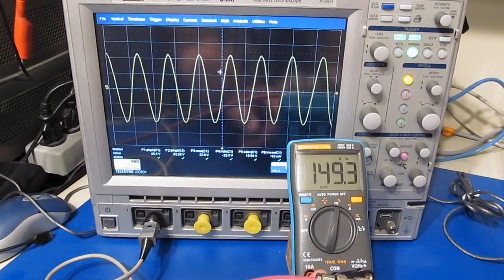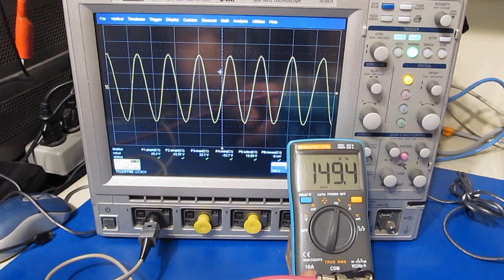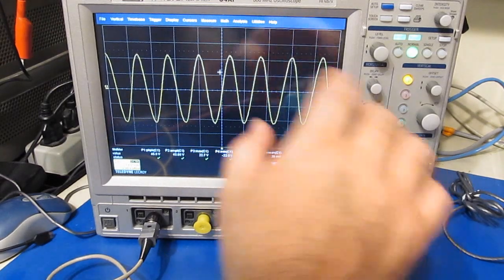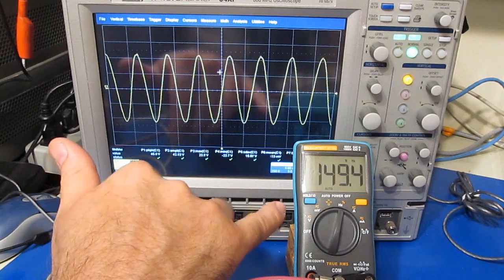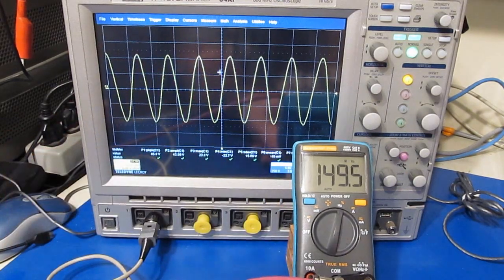Essentially we've placed about 70 picofarads of capacitance right on the front end. And then we've added a 1k ohm resistor. So I can believe that we've really hurt the frequency response of this meter. It's possible that we could add some capacitors in there and try to compensate for some of this. I don't know if it would be worth the effort again.